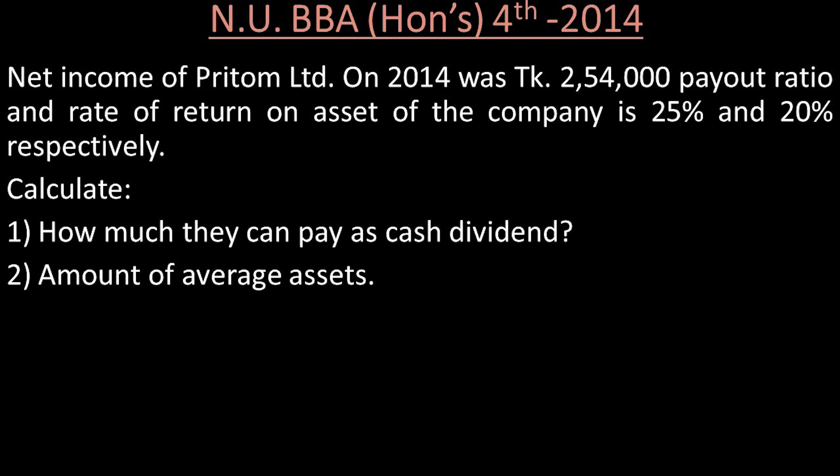The payout ratio is 25% and the rate of return on assets is 20%. Now we have to find: how much can they pay as cash dividend? Cash dividend is the first thing to calculate. We also need to find the amount of average assets.